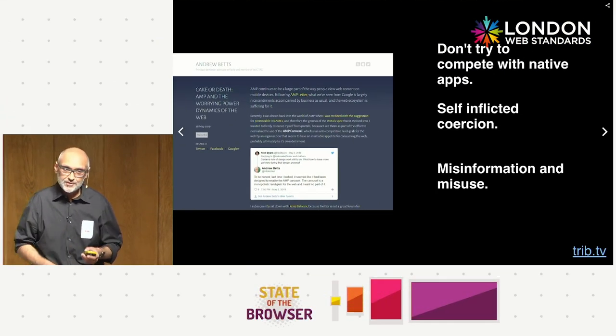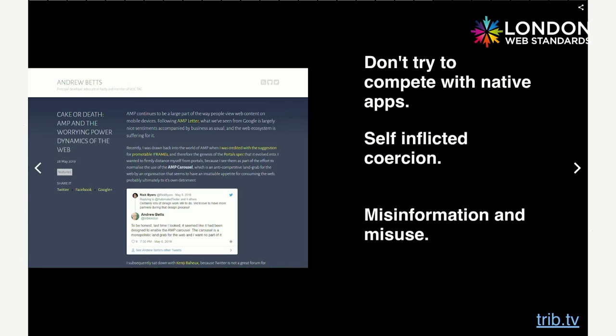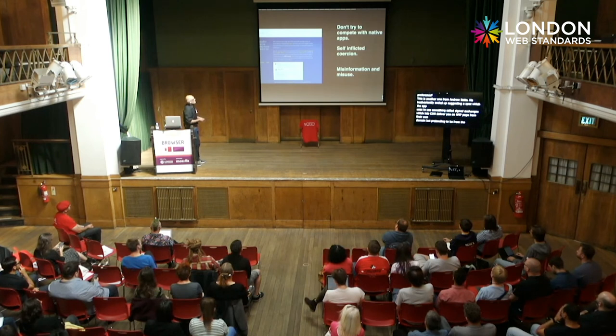A key criticism is that AMP gets preferential treatment in search, while there are already good ways to build performant sites — so why not give all those fast sites the same preference? Andrew Betts inadvertently suggested a web standards spec that AMP now uses for signed exchanges, letting a CDN deliver an AMP page pretending to be from the original domain. One concern is self-inflicted coercion — seeing everyone else's success with AMP makes it hard to ignore. AMP has also been involved in some misinformation and misuse.